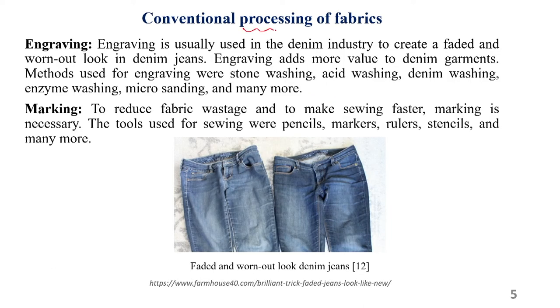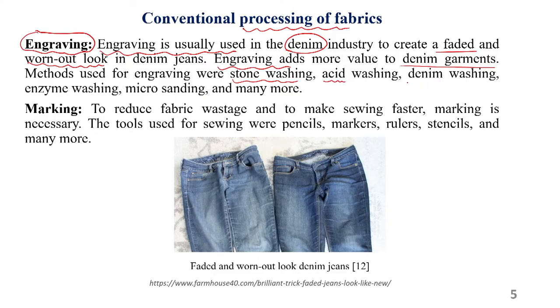Processing of fabrics in industry also needs some sort of engraving operation. Engraving is usually used to process denim garments in the denim industry, for the fading of garments or to give a worn-out look to denim jeans. Engraving adds more value to denim garments. Methods for engraving include stone washing, acid washing, enzyme washing, micro sanding — all mechanical or chemical based processes used to fade the color of denim jeans or produce patterns on denim fabric.